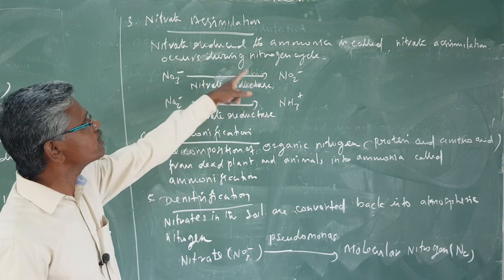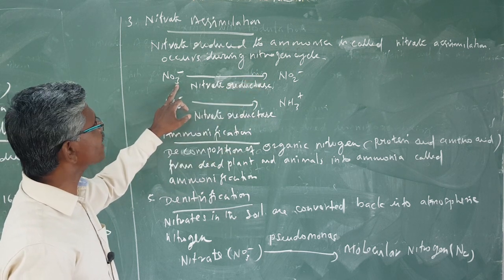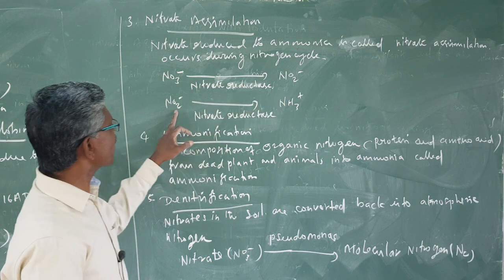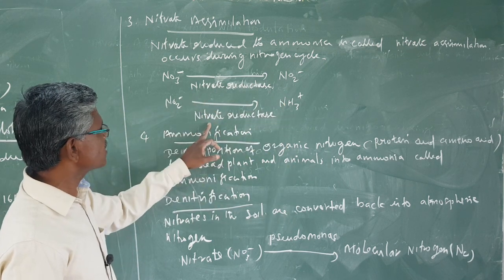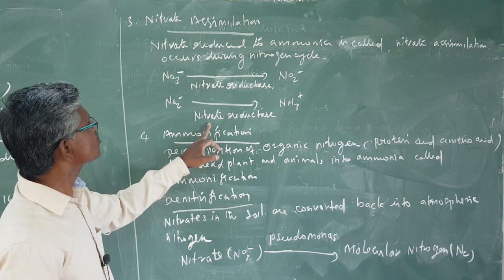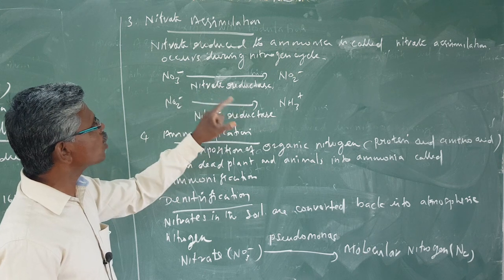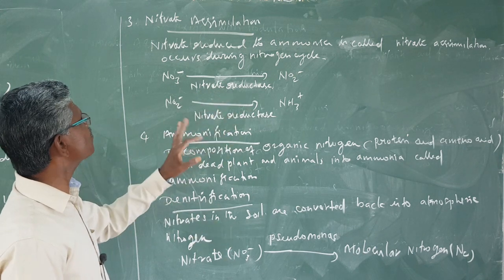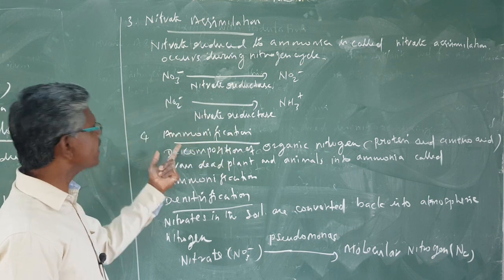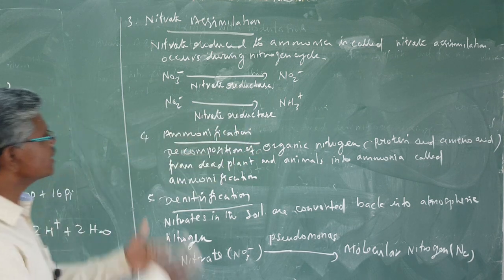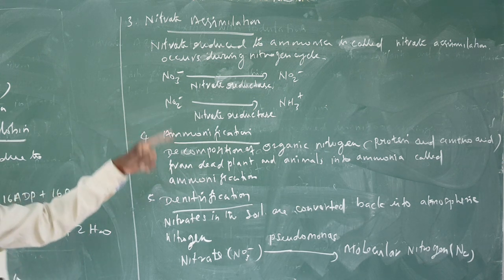During the nitrogen cycle, NO₃⁻ (nitrate) is converted into nitrite, and then nitrite is converted into ammonia. This nitrate reduction is called nitrate reductase activity. So nitrate is again converted into ammonia — chemically: nitrate into nitrite, then nitrite into ammonia. This is the reverse direction of the reaction during the nitrogen cycle.